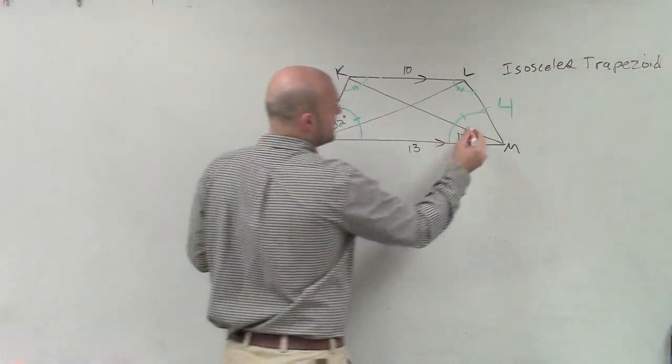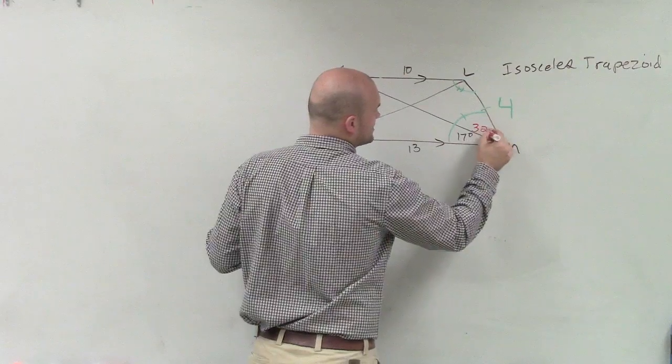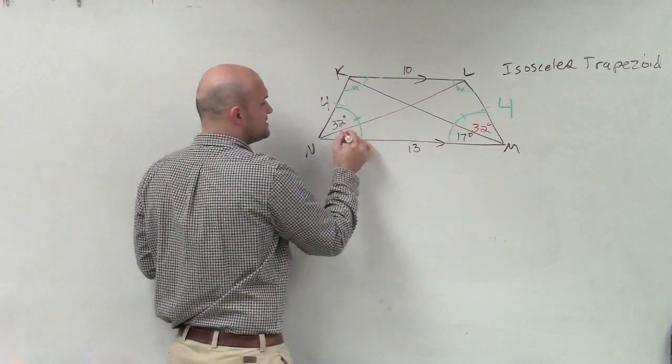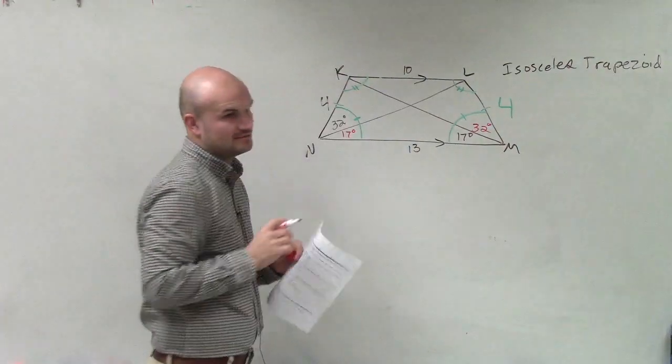if that's 32 degrees, let me get a different marker. If that's 32, then this is going to be 32. If that's 17 degrees, then this is going to be 17 degrees. All right?